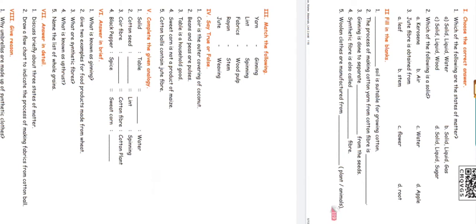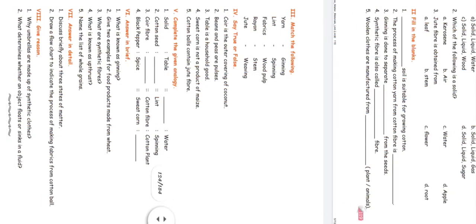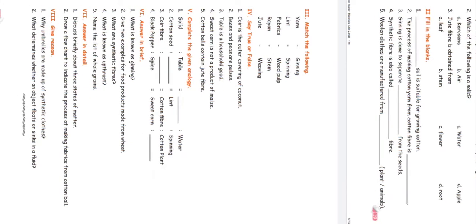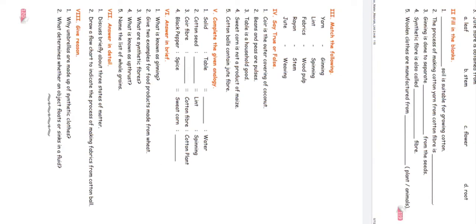Fill in the blanks. Blank soil is suitable for growing cotton — the answer is black soil or alluvial soil; both are suitable for growing cotton. The process of making cotton yarn from cotton fiber is spinning. The process of separating cotton fiber from seeds is called ginning. Synthetic fiber is also called artificial fiber. Woollen clothes are manufactured from animals.